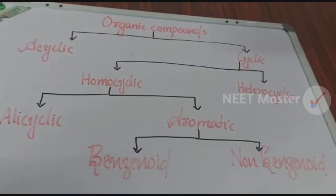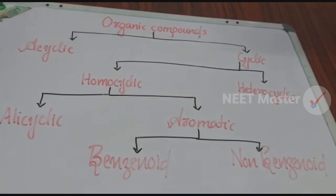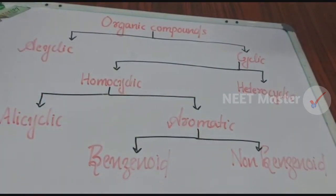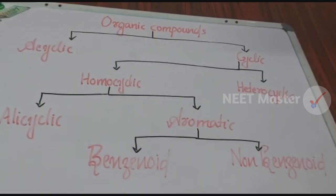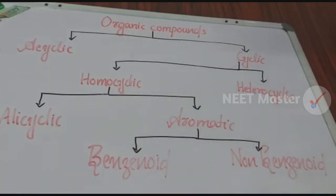Next, we will learn the classification of organic compounds. Organic compounds are first divided into two classes: acyclic (open chain) and cyclic. Cyclic compounds are further divided into homocyclic and heterocyclic. Homocyclic means the ring contains the same type of atoms, while heterocyclic means the ring contains different types of atoms.